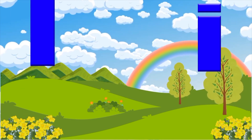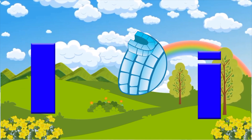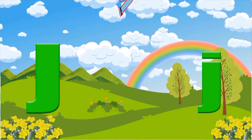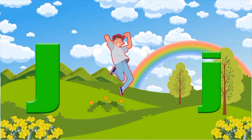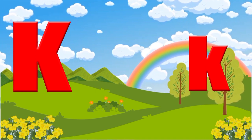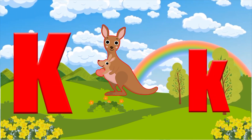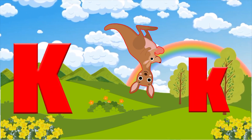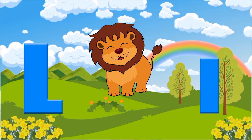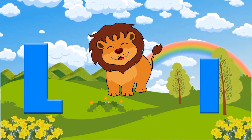I is for igloo, i-i-igloo. J is for jump, j-j-jump. K is for kangaroo, k-k-kangaroo. L is for lion, l-l-lion.